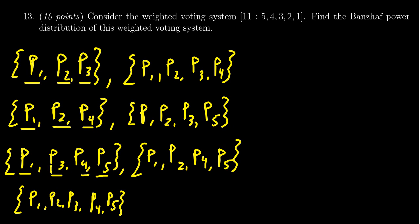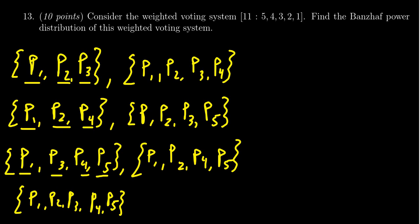I was searching first for the minimal winning coalitions, because after all, if you don't have player 1, can you make this work? You can get 4 plus 3 which is 7, plus 2 which is 9, plus 1 which is 10 — you can't do it. So you do have to have player 1. Player 1 does have veto power. Notice that no other player has veto power in this situation, because we can make it work without player 2, and we've seen all the other ones as well.